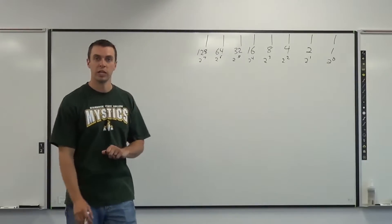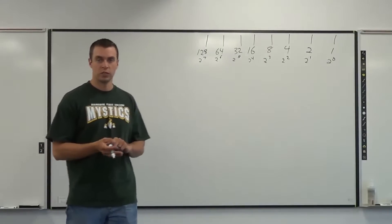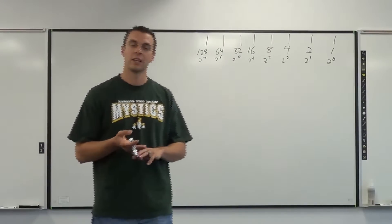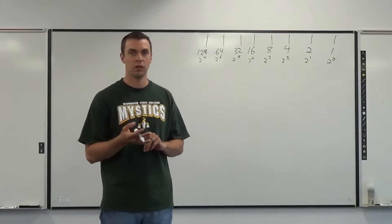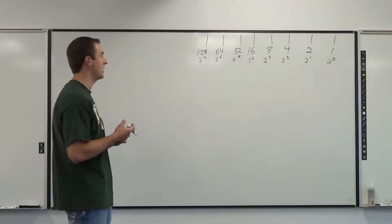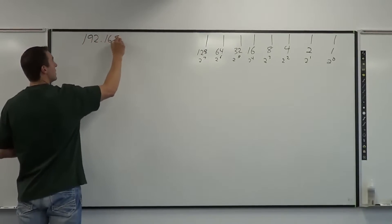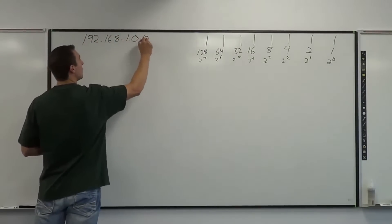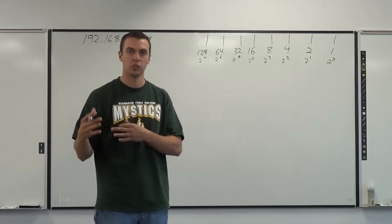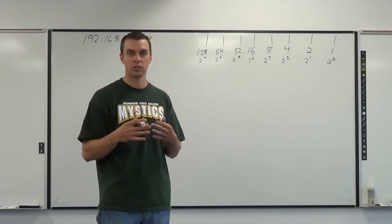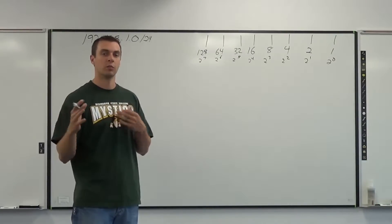With this chart you'd be able to do any type of subnetting you need for this class. There are two different ways to subnet: either by location or by the number of hosts or PCs. When working with locations, we work the left-hand side of the line and use ones. When subnetting for PCs, we work the right-hand side and use zeros.